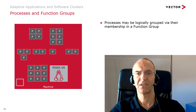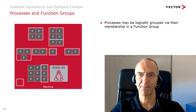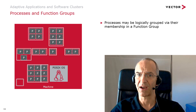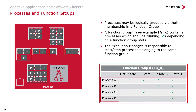A function group contains processes which are somehow related to each other. With different states, you define the processes which are active at the same time. You can also define the activation order of processes in a function group. So if we, for instance, change the state from 3 to 4 in our example, it means that process C is started. All other processes A, B and D are already running.